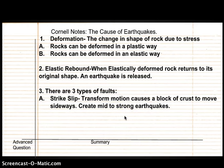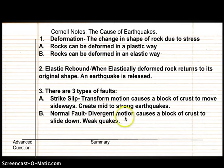Letter B: A normal fault. A normal fault is when divergent motion, like divergent tectonic plate motion, causes a block of crust to move downwards. This creates the weakest kind of earthquakes. Here's a normal fault.